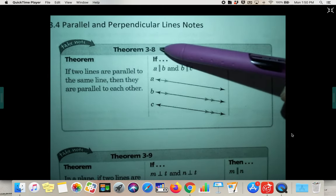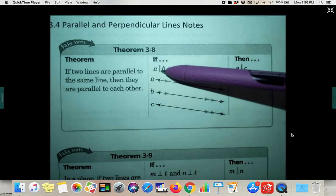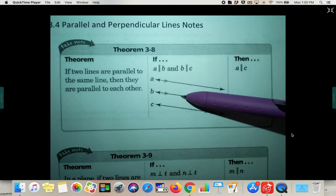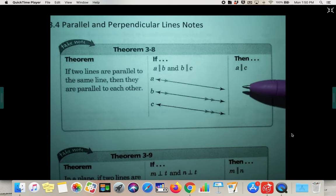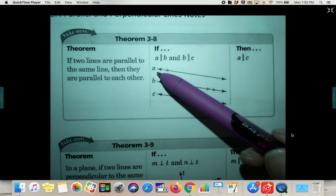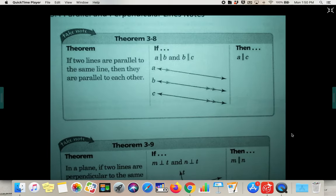We've got some important theorems to discuss. Theorem 3.8 says that if A is parallel to B and B is parallel to C, then A has to be parallel to C. This reminds me of the law of syllogism, but it's basically saying if these two are parallel and these other two are parallel, then all three of them are parallel to each other.